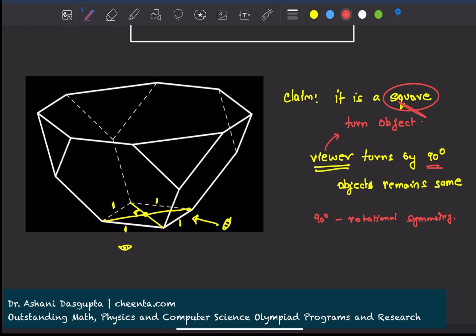Now we are absolutely sure that here this angle is 90 degrees. This angle is 90 degrees. After all, it's a square.